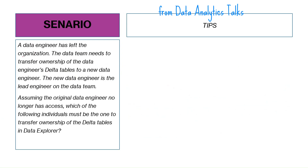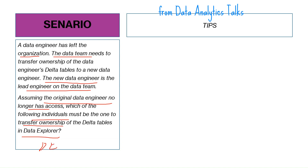Scenario two: a data engineer has left the organization. The data team needs to transfer ownership of that engineer's delta tables to a new lead engineer. Assuming the original data engineer no longer has access, which individual must be the one to transfer ownership of the delta table in the Data Explorer?